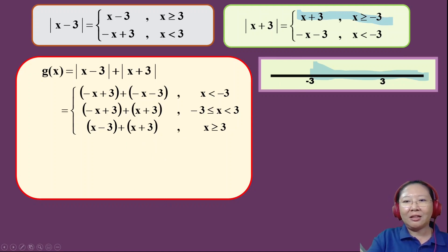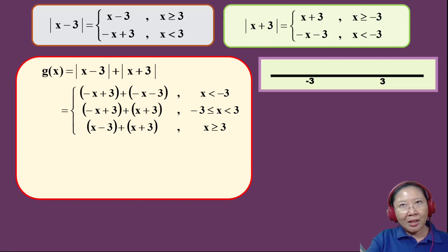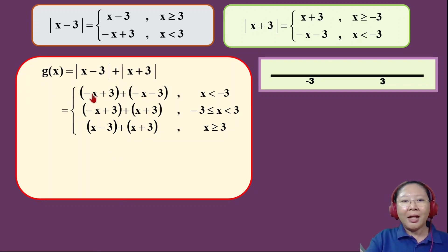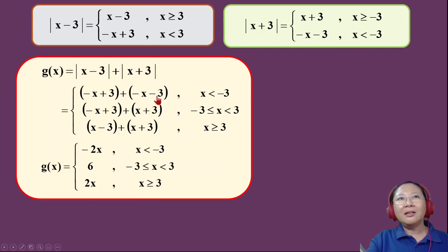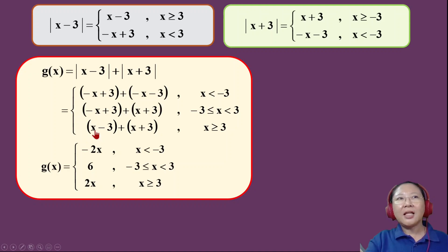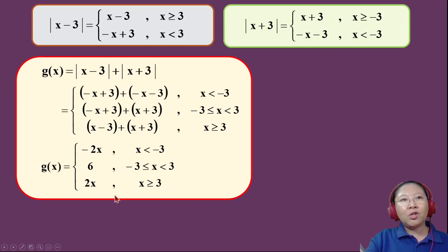Now I settle the calculation for each piece. For x < −3: −x + (−x) = −2x, and 3 + (−3) cancels to 0, giving −2x. For −3 ≤ x < 3: −x + x cancels, and 3 + 3 = 6, giving 6. For x ≥ 3: x + x = 2x, and −3 + 3 cancels, giving 2x. I've now prepared the piecewise function.